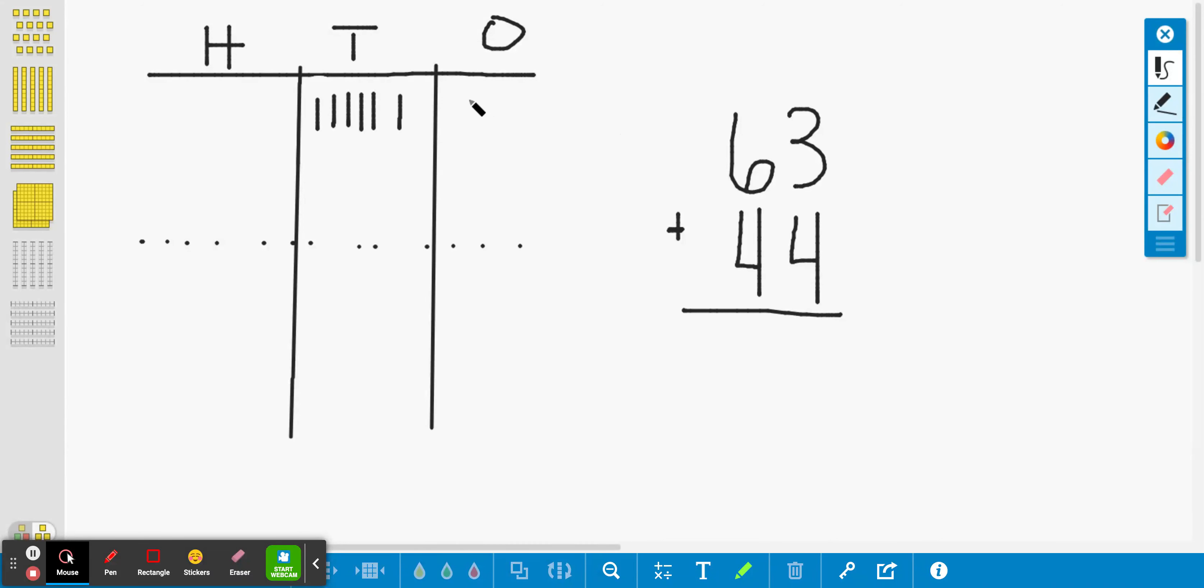Now I need the three ones. I'm going to go one, two, three. Now I'm going to model my 44. So I'm going to have four tens. One, two, three. Four tens is 40.